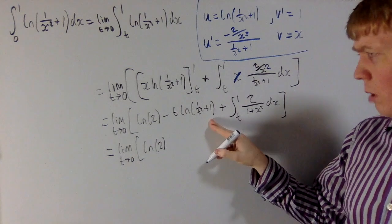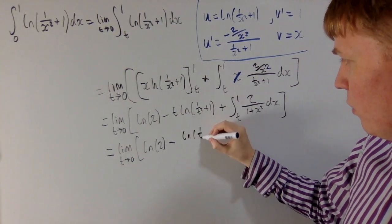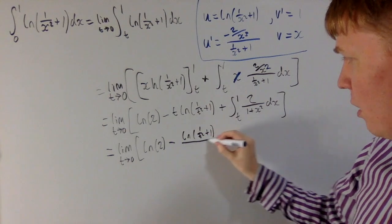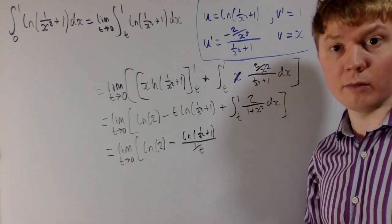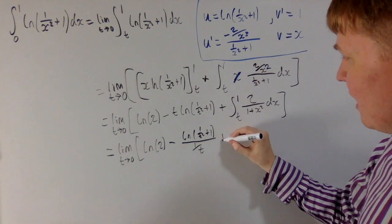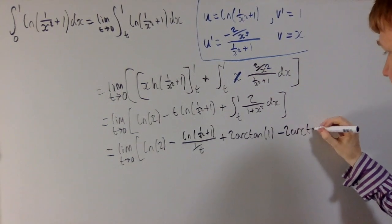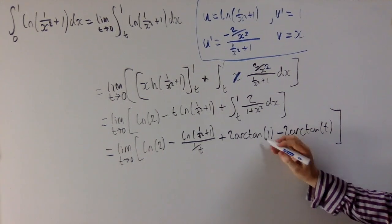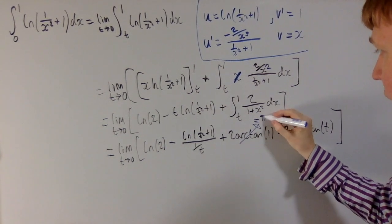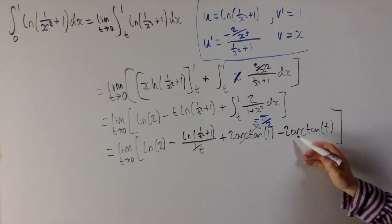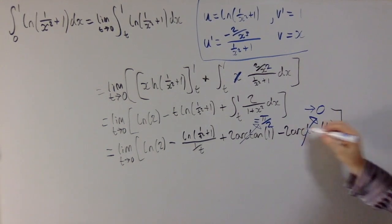I'm going to apply L'Hôpital's rule to the t ln(1 over t squared plus 1) term by writing it as ln(1 over t squared plus 1) divided by 1 over t, so I can differentiate both terms. We also have plus 2 arctan(1) minus 2 arctan(t). Now, arctan(1) is π/4, so 2 arctan(1) equals π/2. And the limit as t goes to 0 of 2 arctan(t): arctan(0) is just 0, so this term converges to 0 and we can remove it.